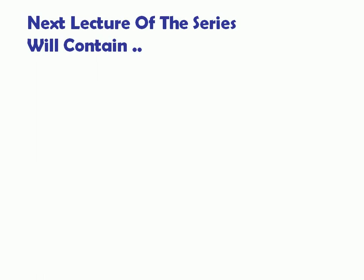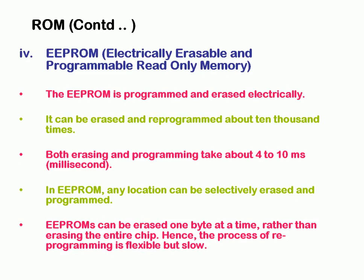I want to discuss a fifth type as a bonus point, and that is Flash Memory. Flash memory is also a ROM type. A pen drive is an example of flash memory — it is a hot-swappable device because we can always connect it to a laptop or mobile, remove it, and retain the data. We can always erase and reprogram data on it.